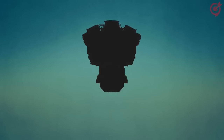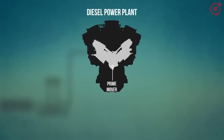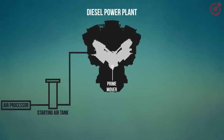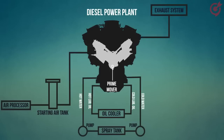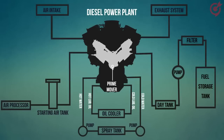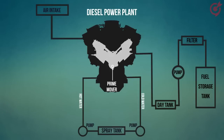The various subsystems of a diesel power plant are: prime mover, starting system, lubrication system, exhaust system, cooling system, air intake system, and fuel system. Let's learn about each of the subsystems in a bit more detail.